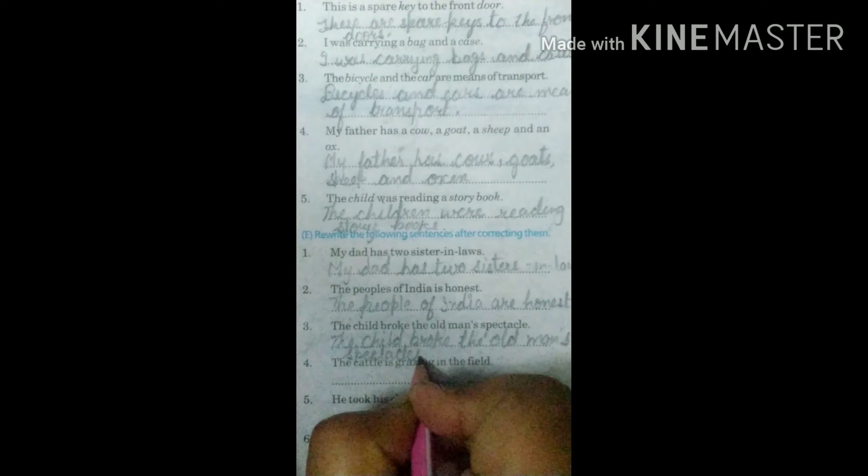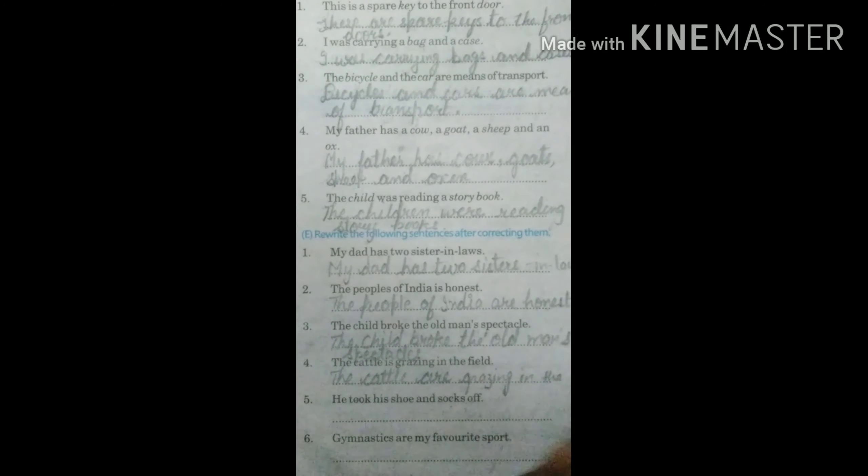Fourth is the cattle is grazing in the field. So it will be the cattle are, we take it plural, grazing in the field.